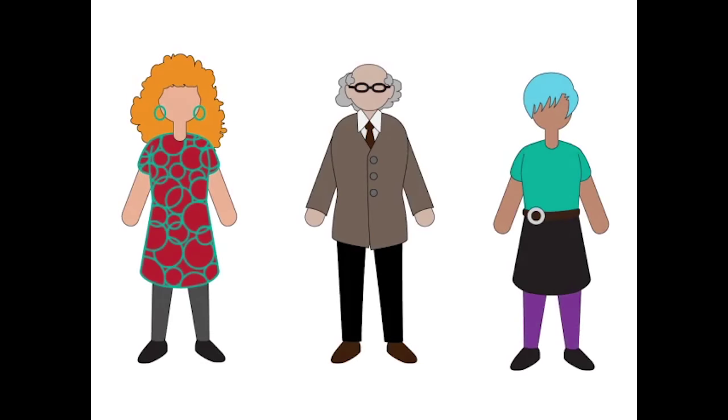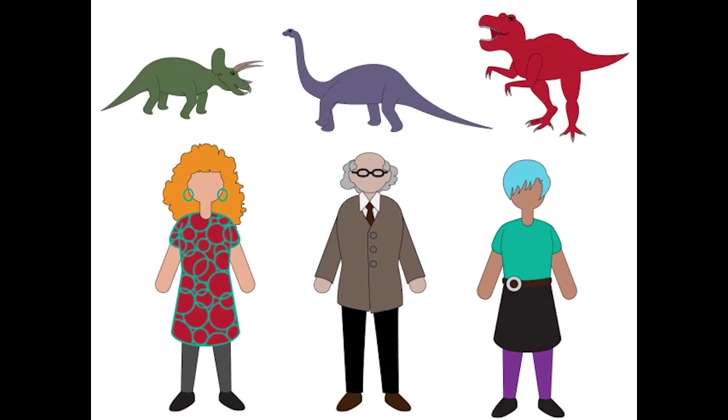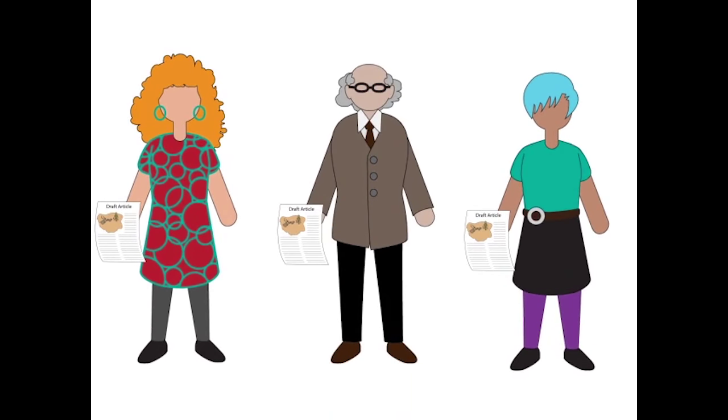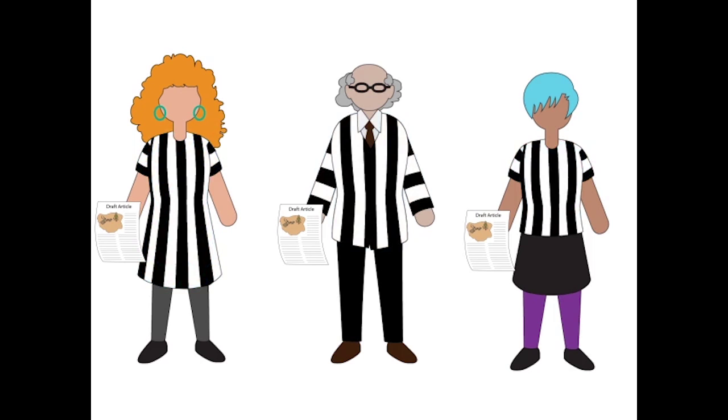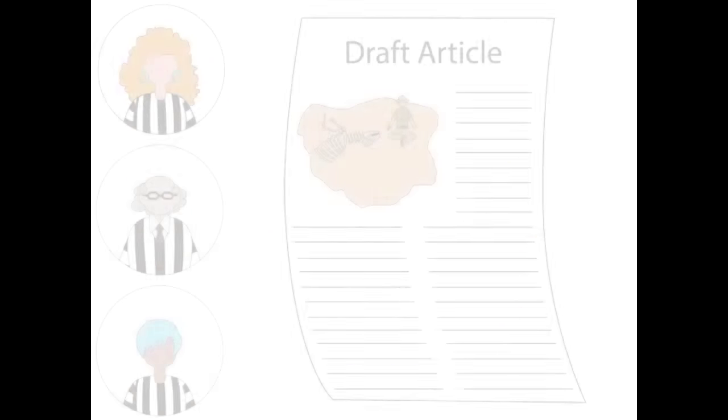These experts are the author's peers since they are working in the same research area. And since they are making a judgment about the article, they are sometimes called referees. So peer-reviewed articles are sometimes called refereed articles.